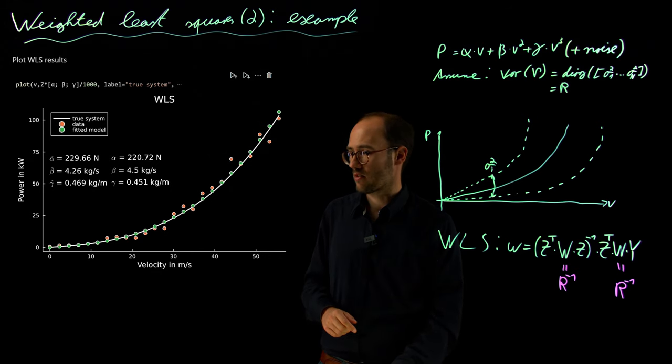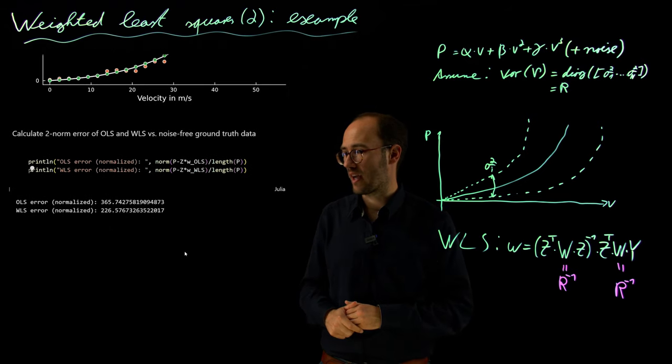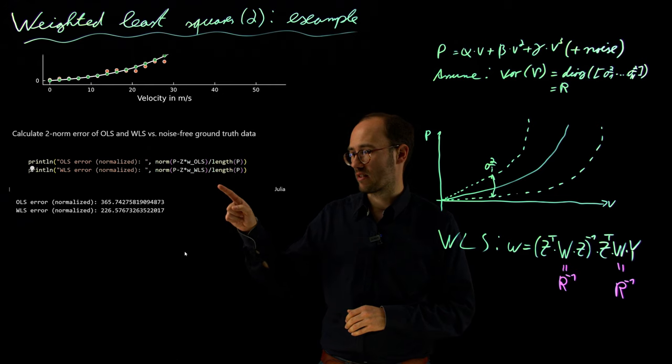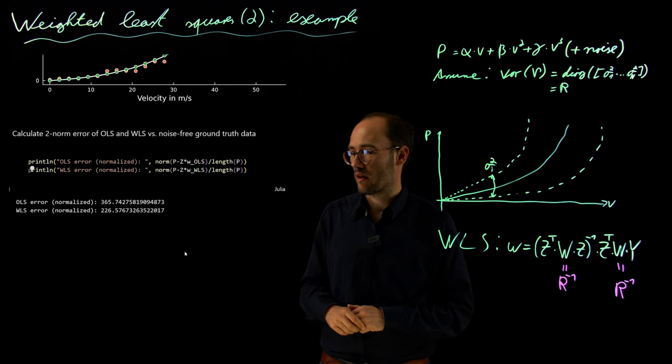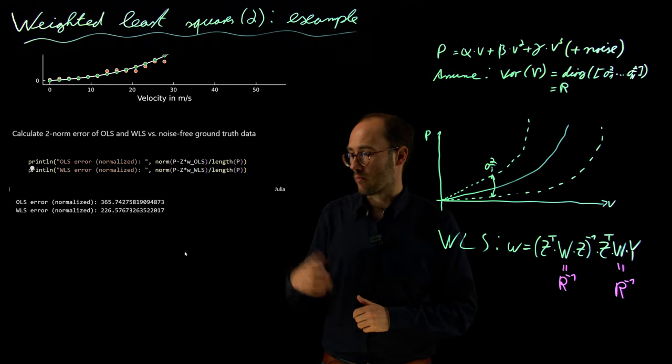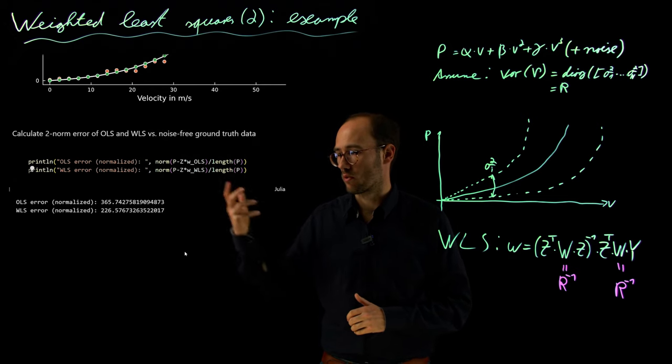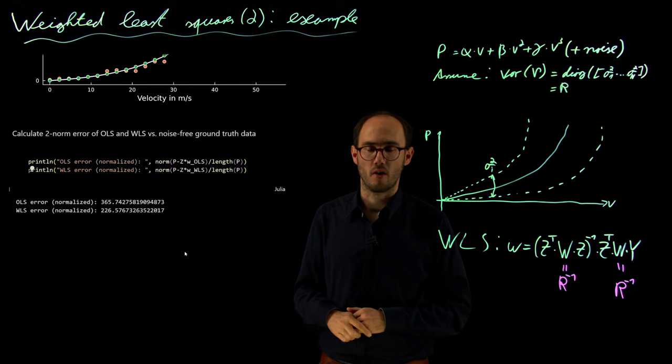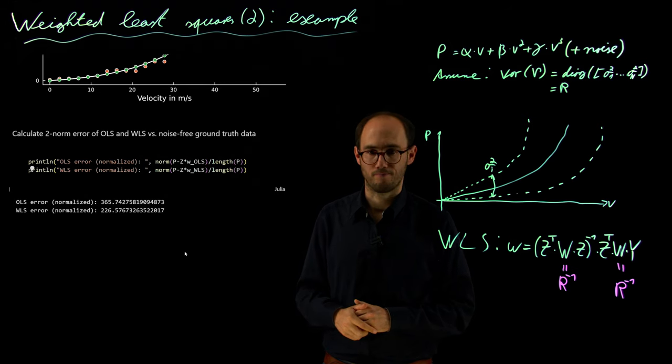Last but not least, in this comparison, we can also compare the normalized fitting error. What we have calculated here in these two last lines is basically the two-norm error of the ordinary least squares fit and the WLS against the noise-free ground truth data, and what we have already seen visually here is also confirmed on a numerical level that due to this improved weighting or this opportunity of utilizing weighting in the WLS approach, we have been able to reduce the predicted error by roughly one-third.